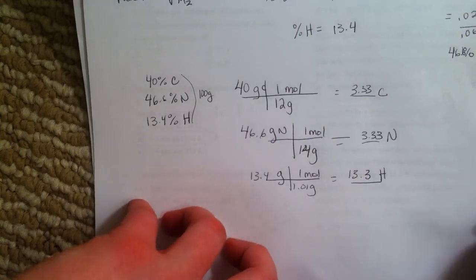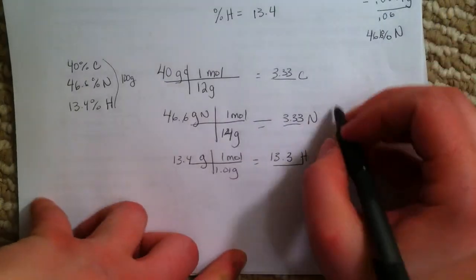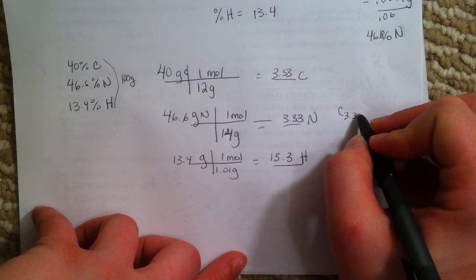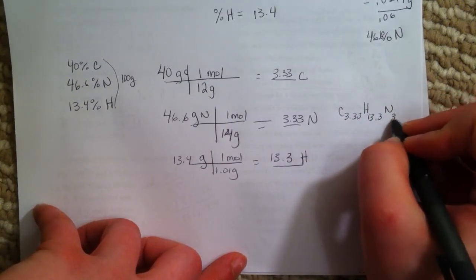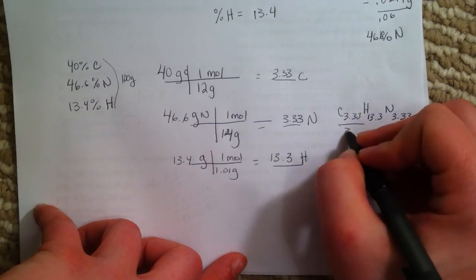Then I like to set it up like this: C 3.33, H 13.3, and N 3.33. So you divide by the smallest.